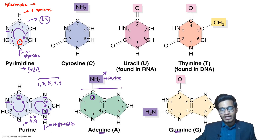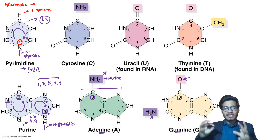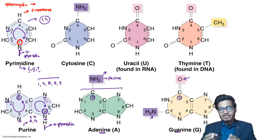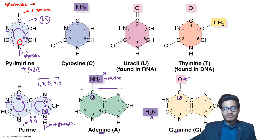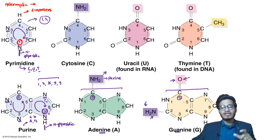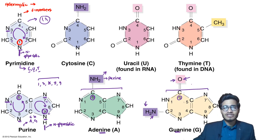For guanine, the 6th position has an oxo group (not amino), and the 2nd position has an amino group. So its name becomes 2-amino-6-oxo-purine. This is the scientific name of guanine — 2 has amino, 6 has oxo, and purine is the name of the ring.